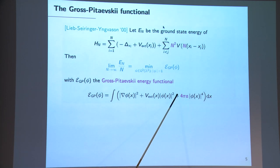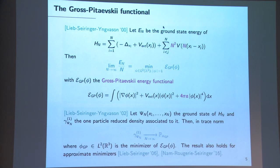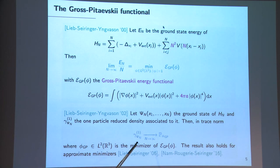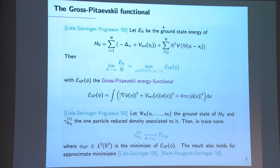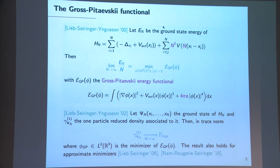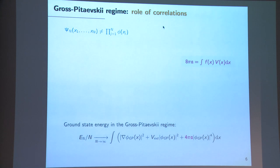Moreover, there is condensation for the ground state: the one-particle density matrix converges in trace norm to the projector onto the minimizer of the Gross-Pitaevski energy functional. This result is even more general — it holds not only for the ground state but for any approximate minimizer, i.e., any state whose energy per particle converges to the ground state energy. This result reveals a striking property of the Gross-Pitaevski regime: the role of correlations.